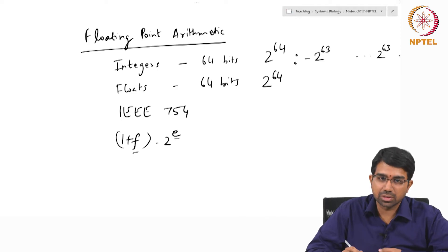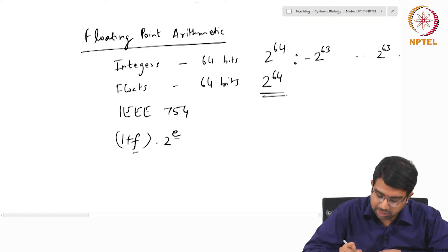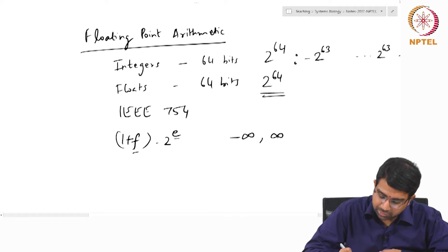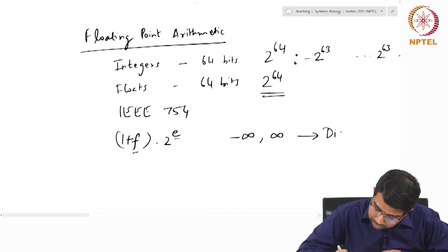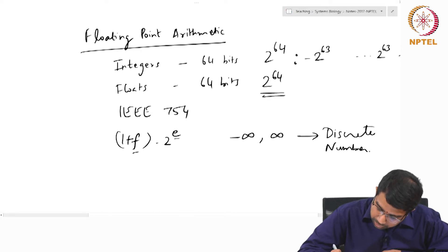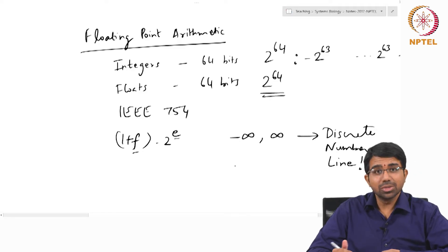It is worth understanding this because you only have 2 to the 64 possible values, so you are compressing all numbers between minus infinity and plus infinity onto a discrete number line. 2^64 is big, but you do not have every number there.